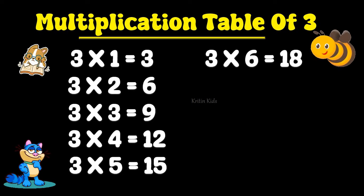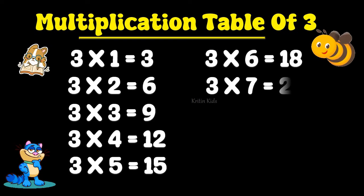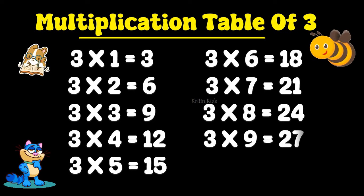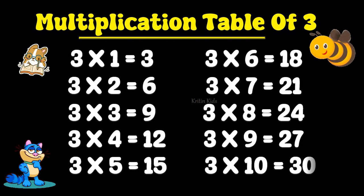3 6s are 18. 3 7s are 21, 3 8s are 24, 3 9s are 27, 3 10s are 30.